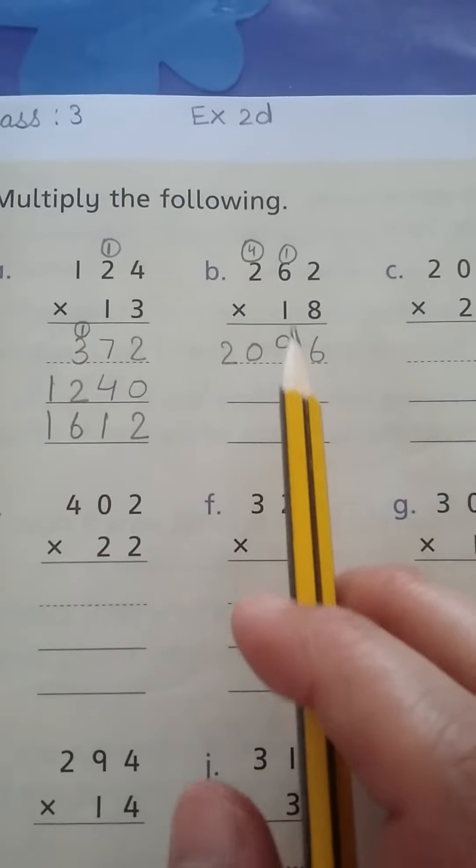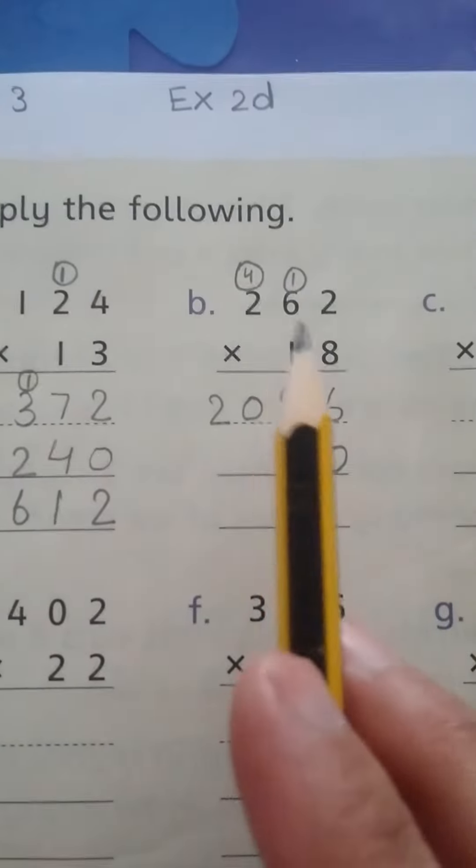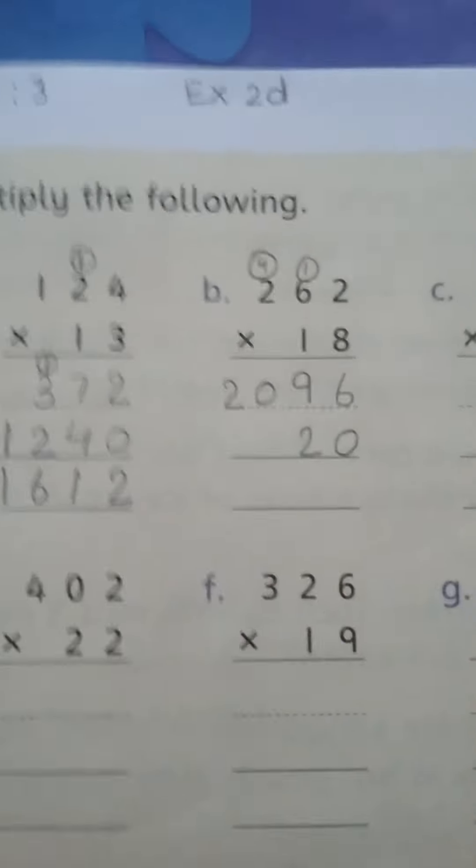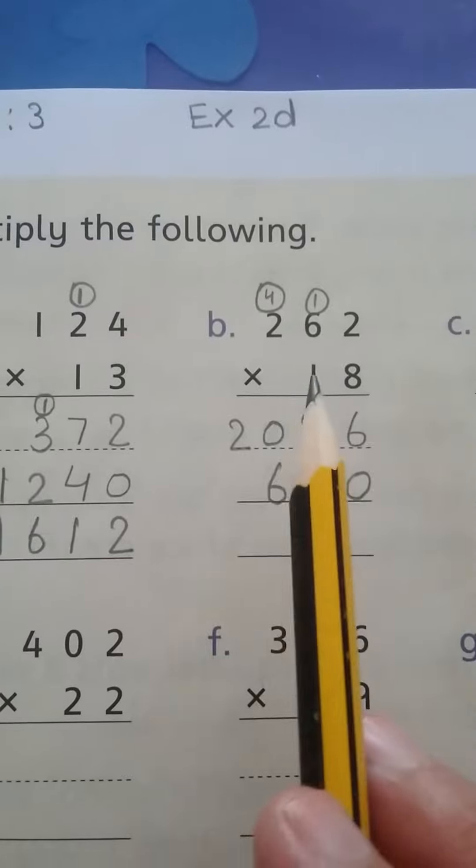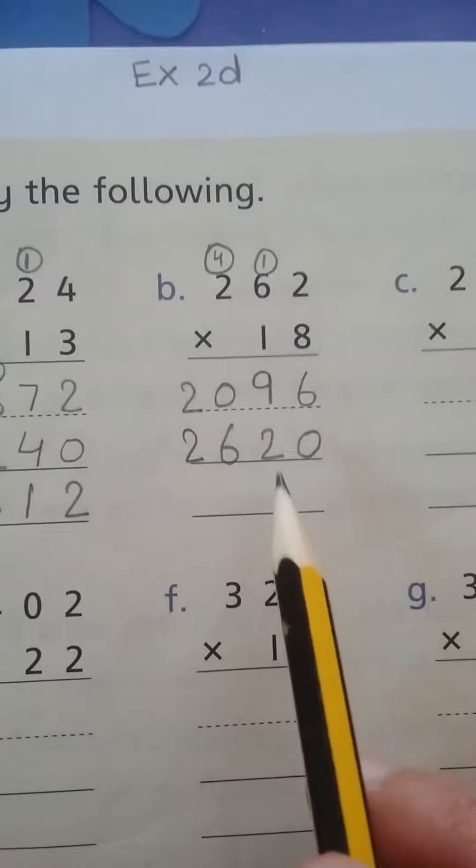One twos are two, one sixes are six, one twos are two. Now we will add these values.